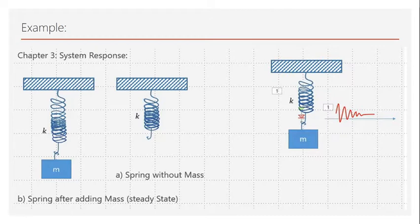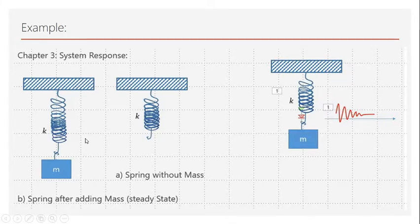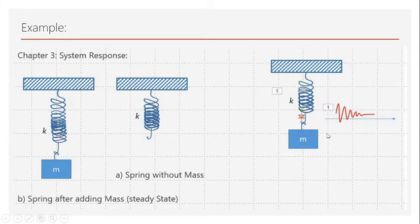Once we attach a mass to this system, the spring starts to accelerate — it starts to bounce. It will be stretched out first because the weight pulls it down, and then the nature of the spring fights that and pulls it back up. So it is going to have a temporary change in the position of the tip and the length of the spring.